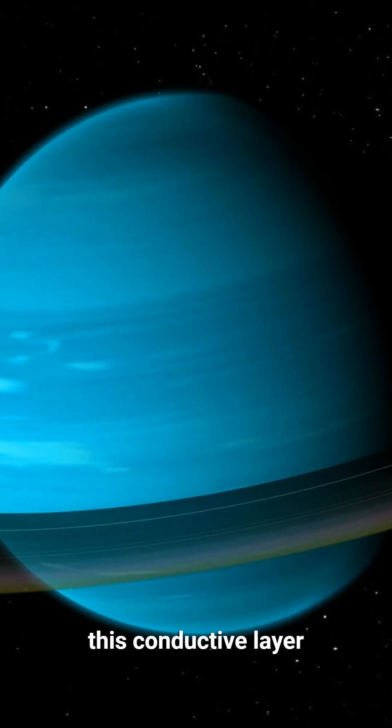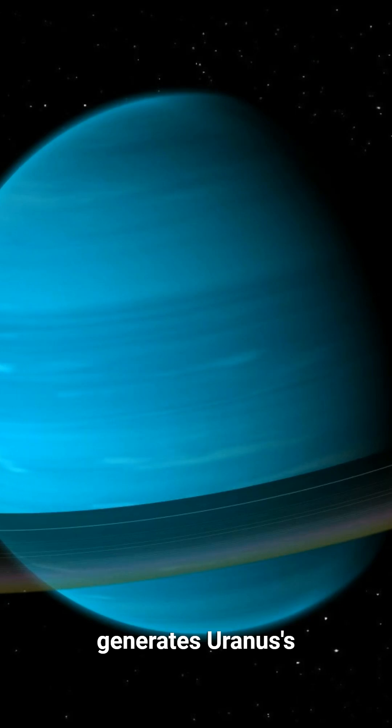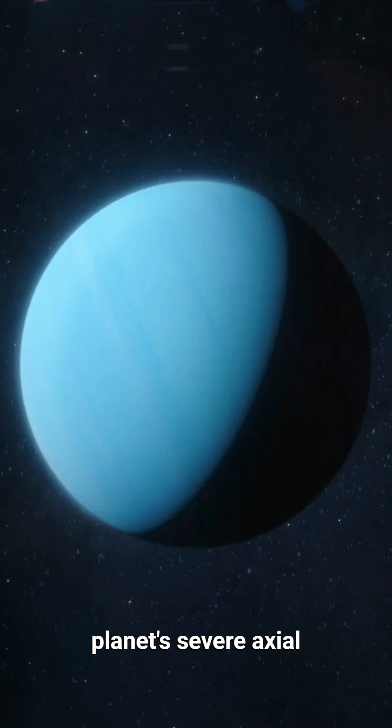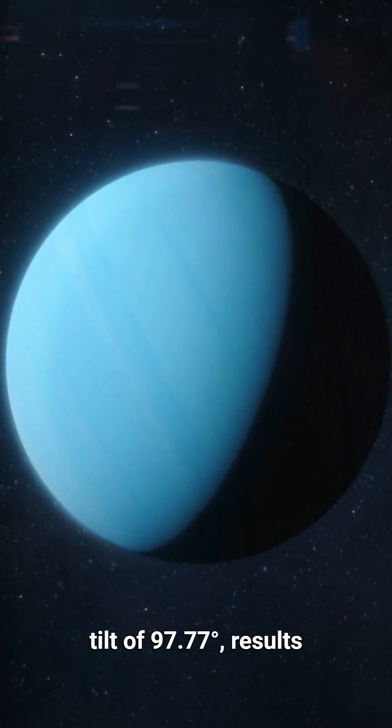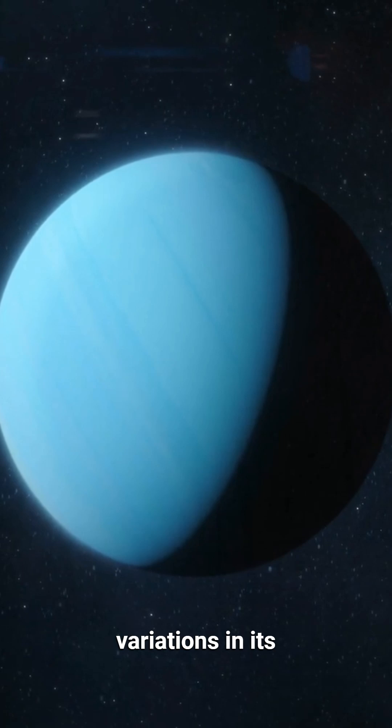The rapid rotation of this conductive layer generates Uranus's magnetic field. This action, combined with the planet's severe axial tilt of 97.77 degrees, results in extreme seasonal variations in its magnetosphere, unlike anything observed in the rest of the solar system.